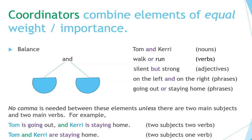Coordinators combine elements of equal weight or importance. They are words like and, but, or, so, and for — there's a balance between two elements. For example: Tom and Carrie (two nouns); walk or run (two verbs); silent but strong (two adjectives); on the left and on the right (two phrases); going out or staying home (also phrases).